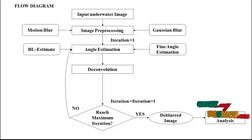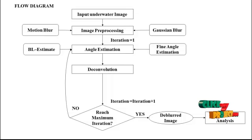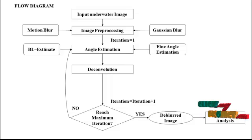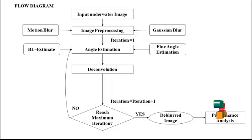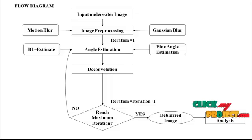Next, we estimate the angle. Here, we estimate three types of angles: the first is fine angle estimation, the second is coarse angle estimation, and the third is BL estimation. Next, we deconvolute the image. Each maximum iteration will be increased; otherwise, the loop goes back to angle estimation. Next, we deblur the image, and finally we measure the performance.